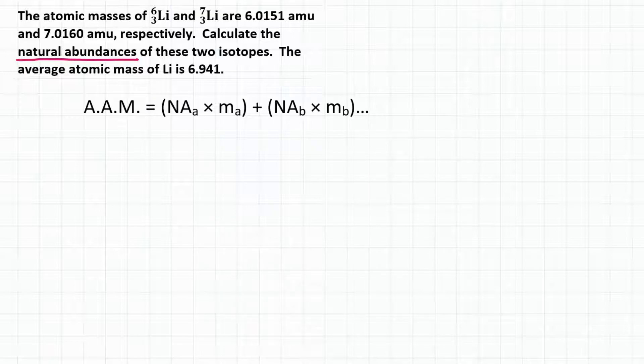So we have two isotopes: lithium-6 and lithium-7. Now they have different masses. We know that lithium-6 has a mass of 6.0151 AMUs and the atomic mass of lithium-7 is 7.0160 AMUs. So using those two atomic masses and using the average atomic mass, which is 6.941 AMUs,